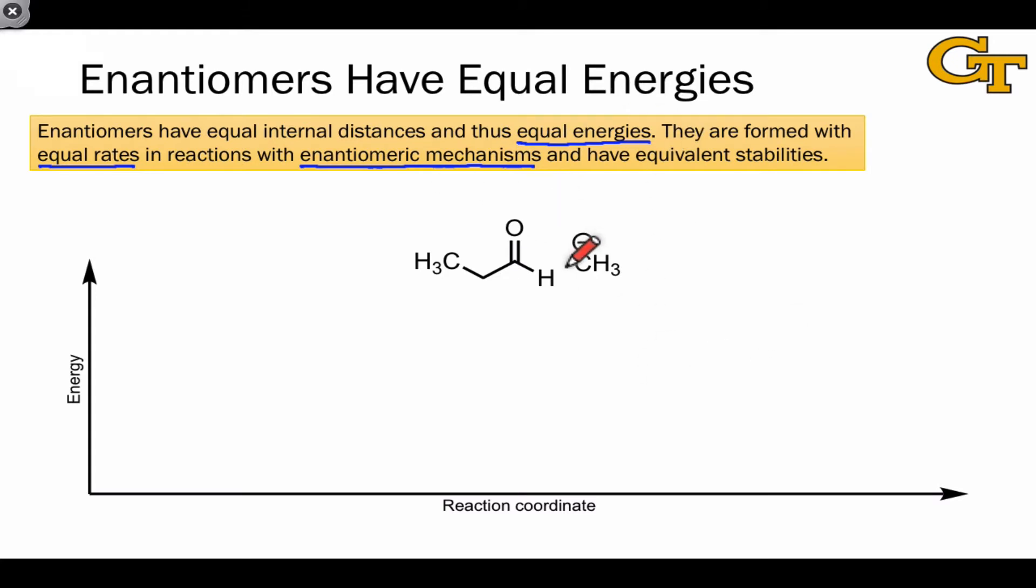To ground this in an example, let's look at the addition of methyl anion to the carbonyl compound shown here, which proceeds through a single step mechanism like this. The methyl group can approach from above or below the plane formed by the carbonyl oxygen, hydrogen, and alpha carbon. And depending on its direction of approach, a pair of enantiomers forms.